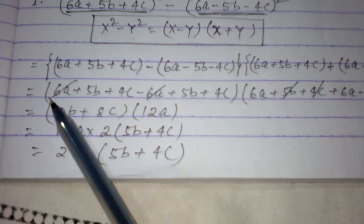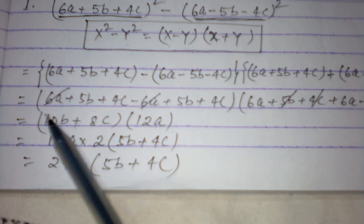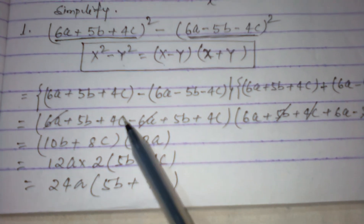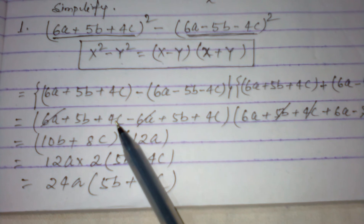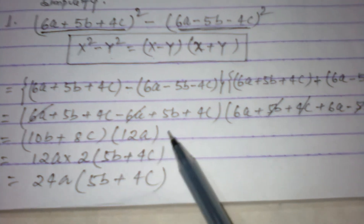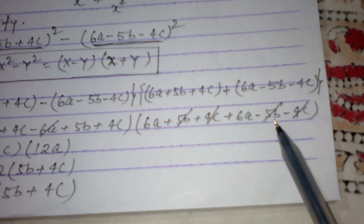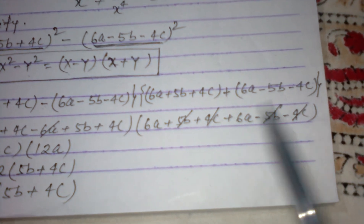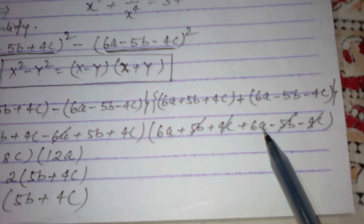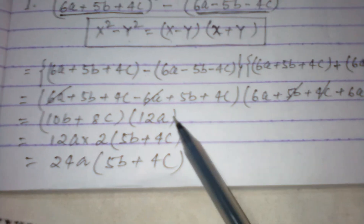In the first factor (x - y): 6a and -6a cancel out, 5b + 5b gives 10b, and 4c + 4c gives 8c. In the second factor (x + y): 5b and -5b cancel out, 4c and -4c cancel out, and 6a + 6a gives 12a.